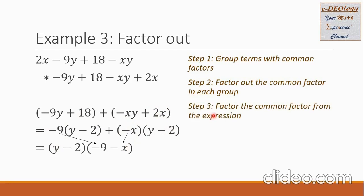For step 3, let us factor the common factor from the expression. The common factor is y minus 2, which is now outside. For the second factor, it should be a binomial. I collect the remaining terms: negative 9 from the first group, and negative x from the second group.